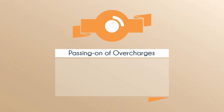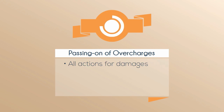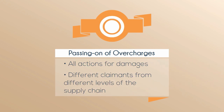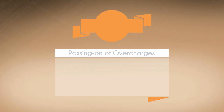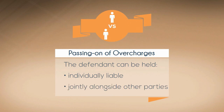In such cases, in order to avoid multiple liability, national courts have to be capable to take into account all the actions for damages brought by different claimants from different levels of the supply chain. The defendant can be held individually liable for the harm caused or jointly alongside other parties.